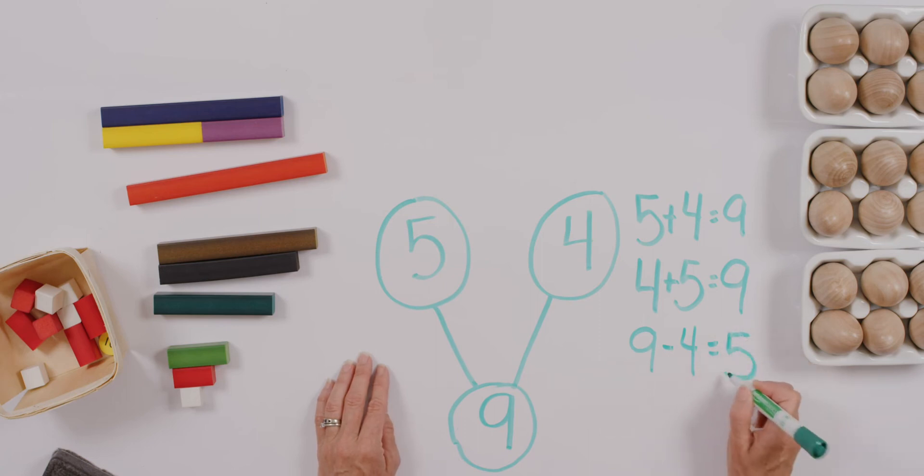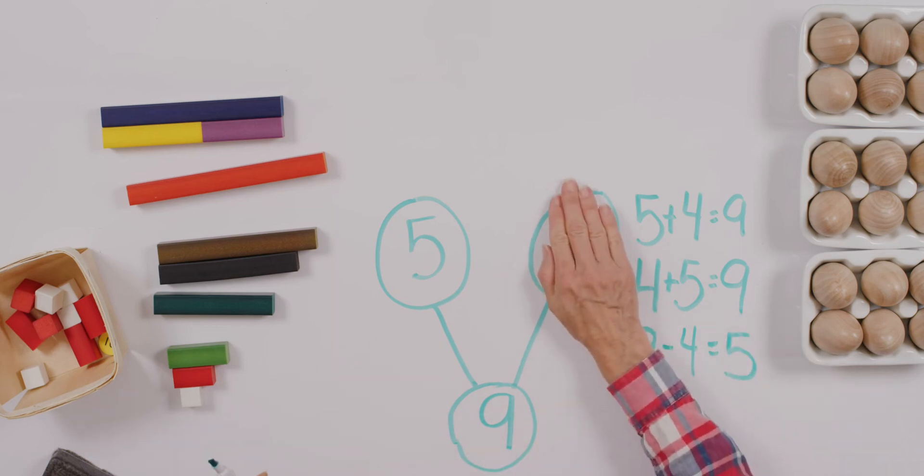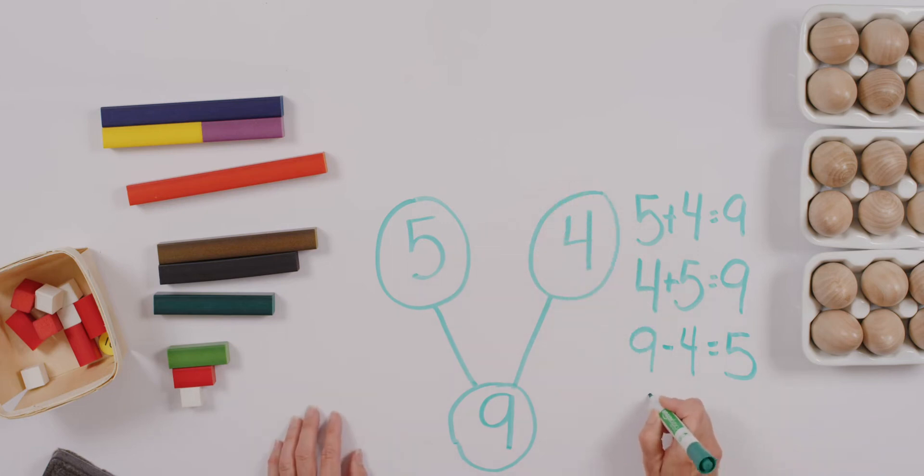You can think about these numbers as sort of like living in a home together. They're kind of like a little family. And so let's do it this way. What would my number expression be to show this number bond? Did you say nine minus five equals four?